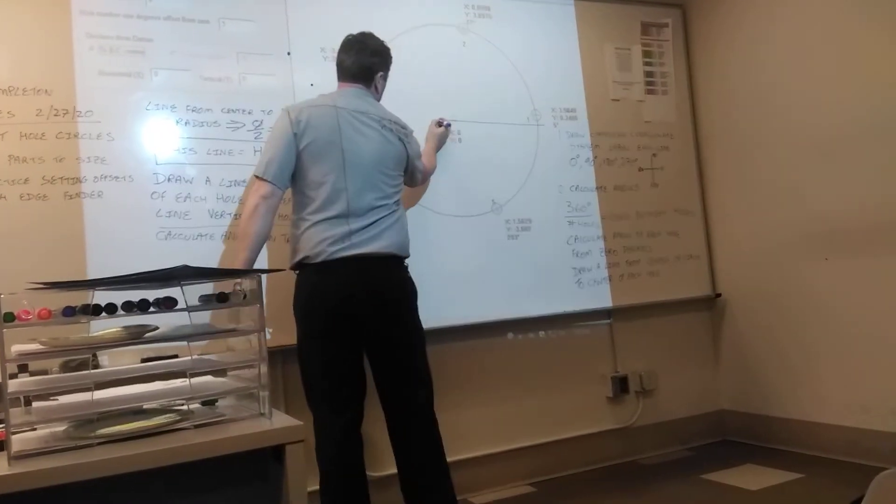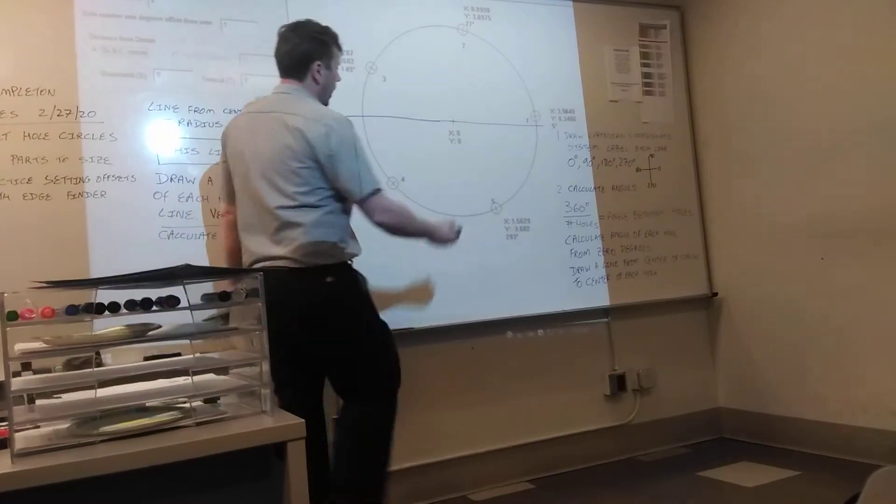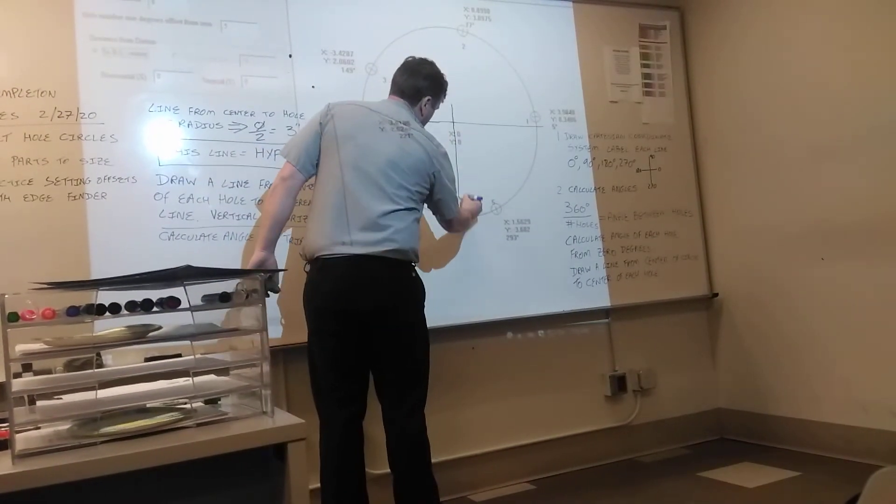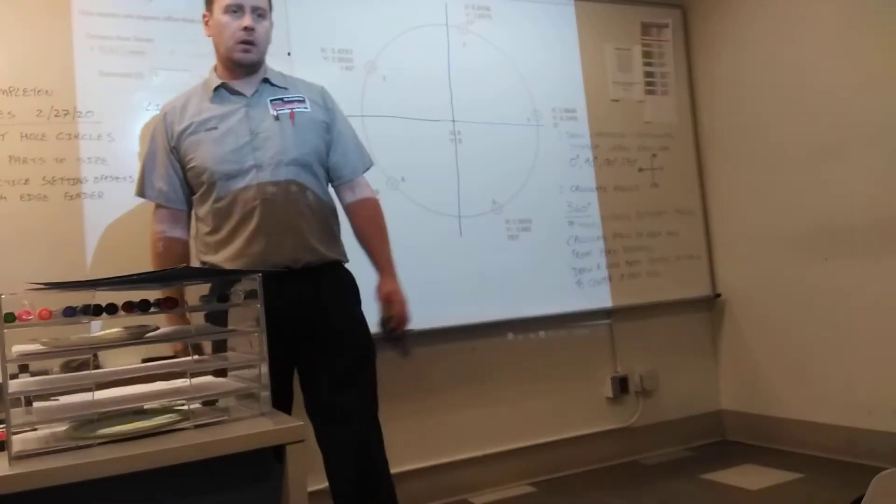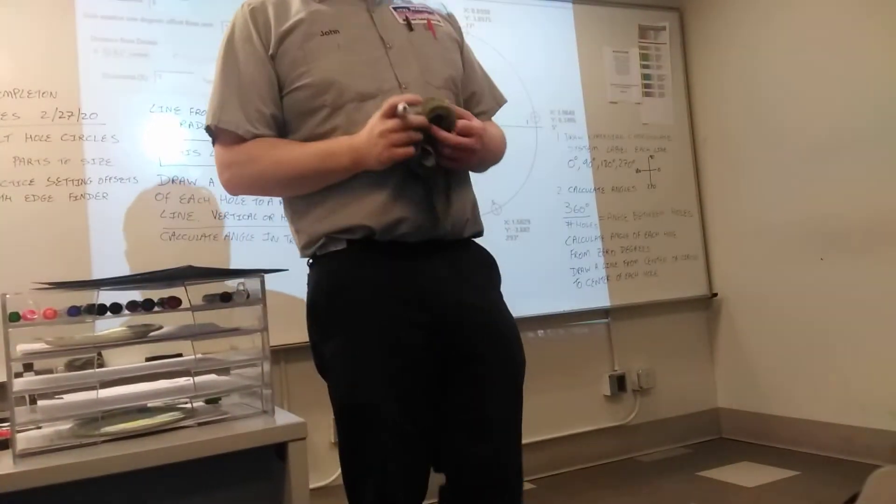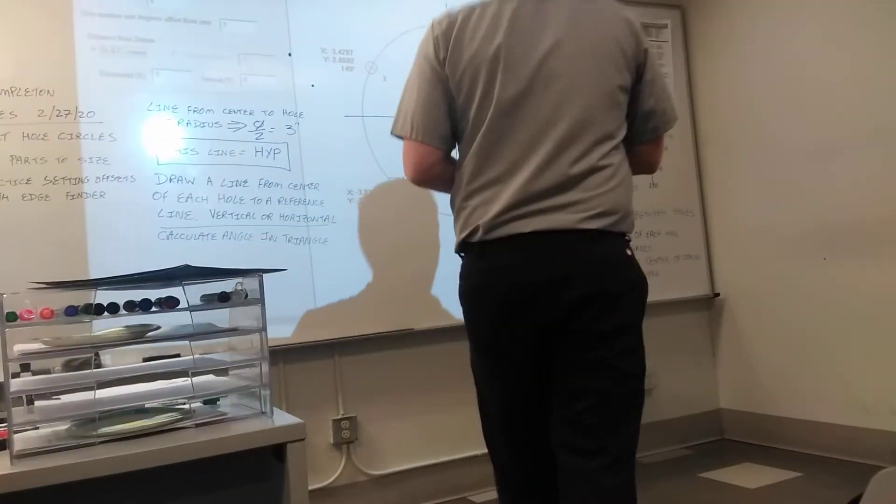So we've got the horizontal axis that's representing X and the vertical axis that is representing Y. The bolt to the right is labeled as five degrees. Five degrees from where? Center. That's center line. Zero.